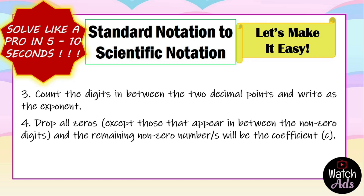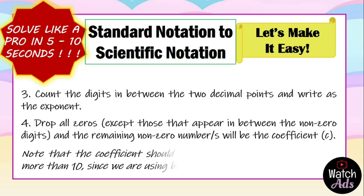Let's have an example: sixty thousand seven hundred. You are just going to drop the last two zeros, but you're not going to drop the zero that appears in between six and seven. Note: the coefficient should not be more than 10, since we are using base 10.